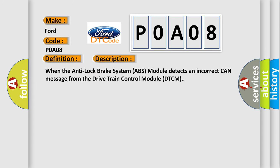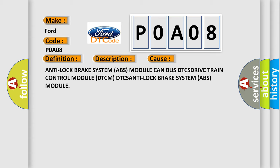When the Anti-Lock Brake System ABS module detects an incorrect CAN message from the Drivetrain Control Module DTCM, this diagnostic error occurs most often in these cases: Anti-Lock Brake System ABS Module CAN bus DTCS, Drivetrain Control Module DTCM DTCS, Anti-Lock Brake System ABS Module.